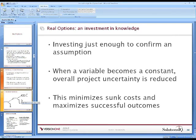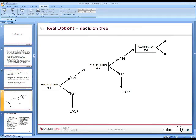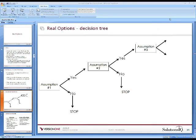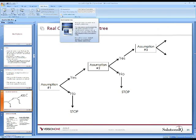Looking at the decision tree: for assumption number one, an investment is made to confirm whether that assumption is accurate or not. If it's not accurate, you have the ability to stop the project. If it is accurate, you go on to assumption number two and confirm that, and so on. The idea is that you're gaining knowledge through the whole process, gaining confidence in your business case, and having appropriate information to go forward.